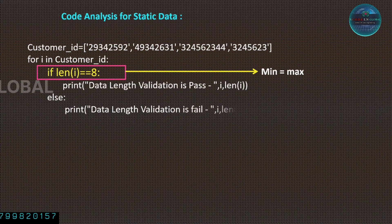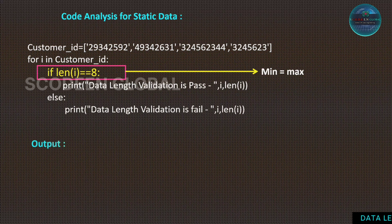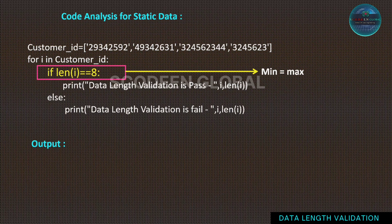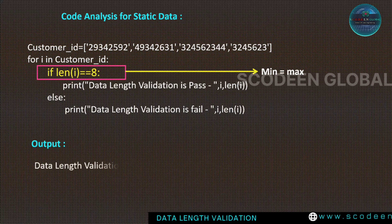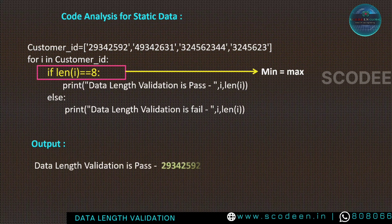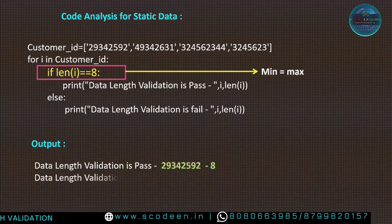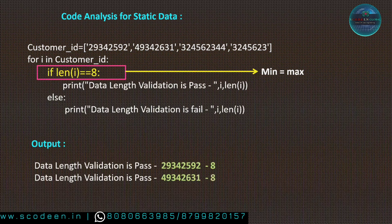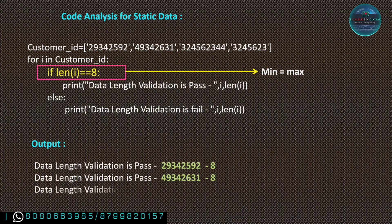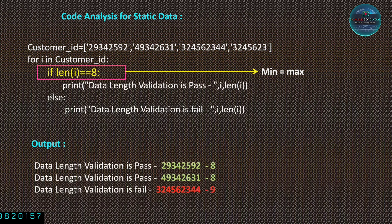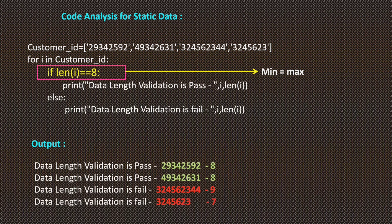The most important point is to analyze whether the data is static or dynamic — that is the nucleus of data length validation. We can write any script — whether test automation, Java, or Python — using this logic. The logic is absolute and constant. Thanks for your time; please subscribe to the channel so I can reach you with more interesting topics.